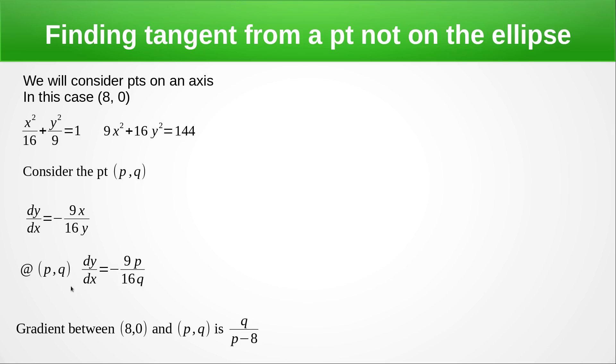Now, the gradient between the point (8,0) and (p,q) is just q / (p - 8). So that's just change in y over change in x. And those have got to be equal to each other. So we end up with this. Now, if we cross multiply and rearrange, we get 9p² + 16q² = 72. Now, I said that would be important. Over here, that's 144.